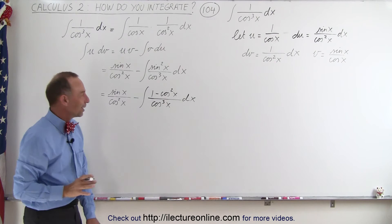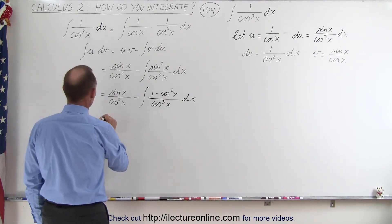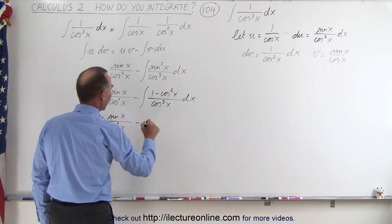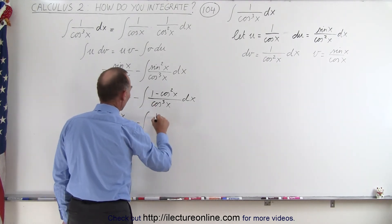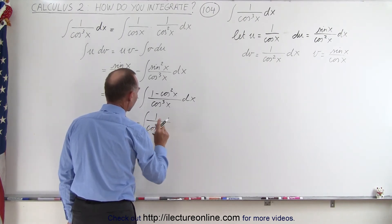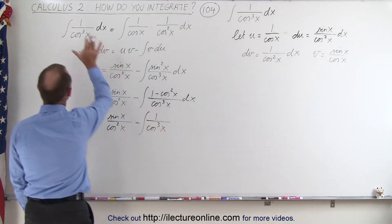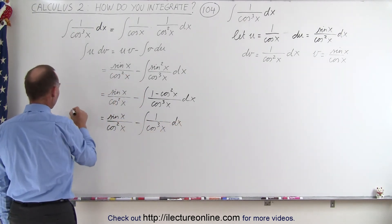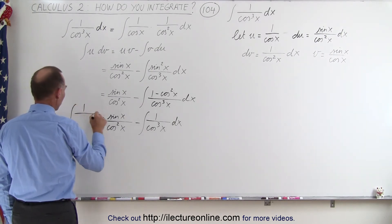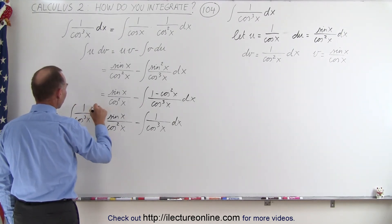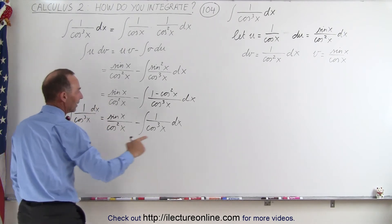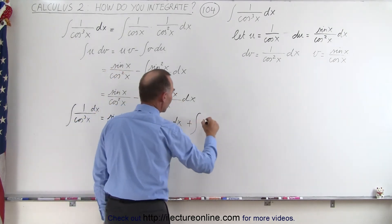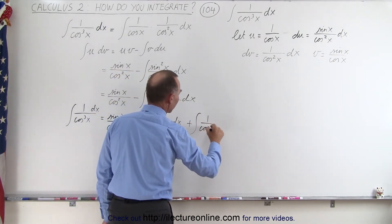Now we can write this as two separate integrals. This is equal to the sine of x divided by the cosine square of x minus the integral of 1 over the cosine cube of x. Notice that this is the integral we started with. We also have a plus the integral of cosine square divided by cosine cube, which is 1 over the cosine of x dx.